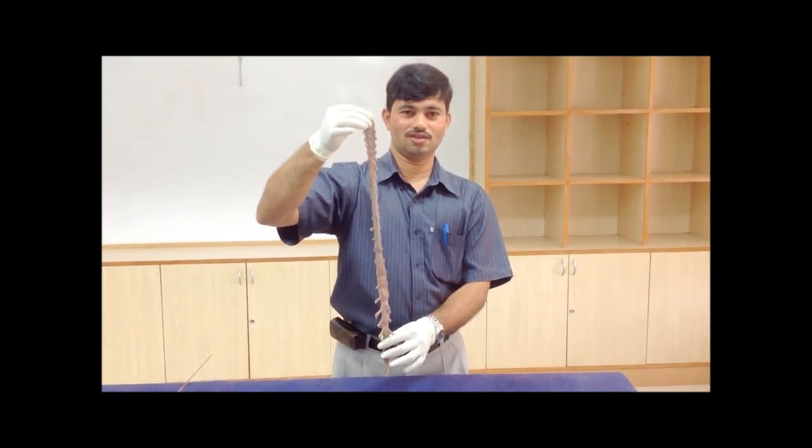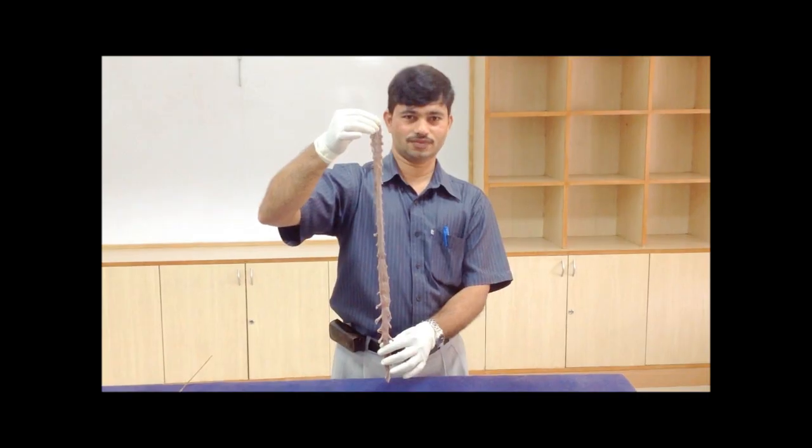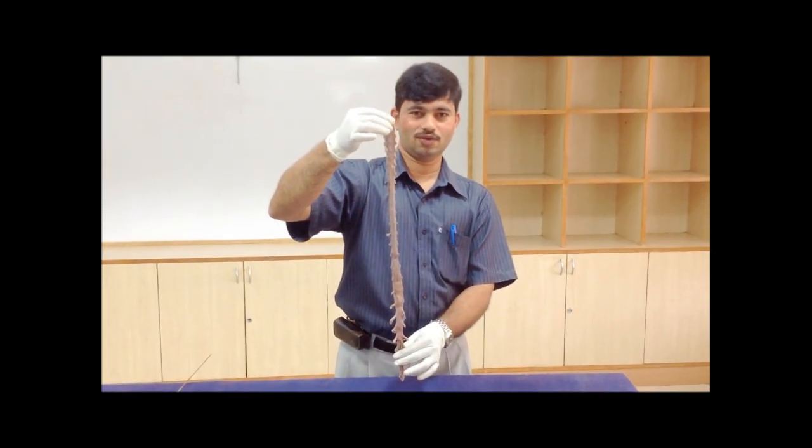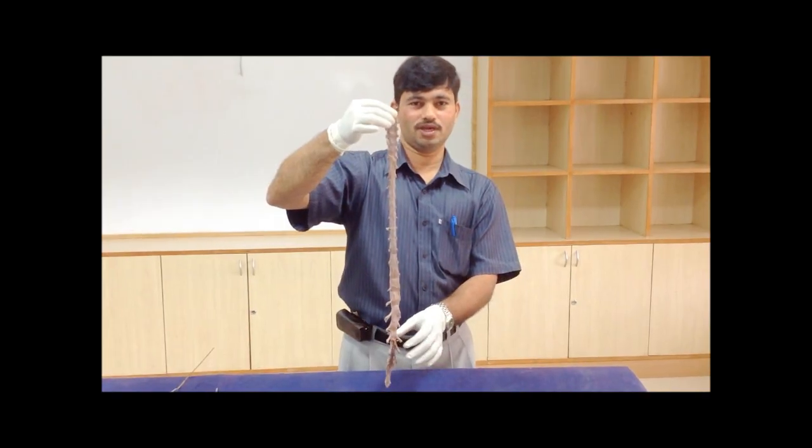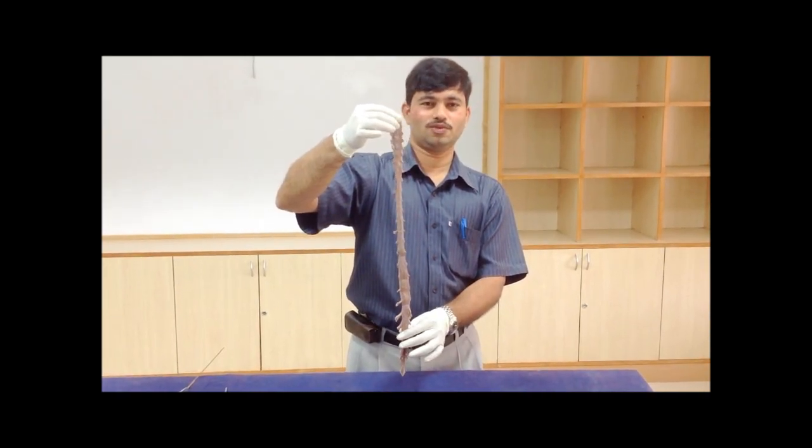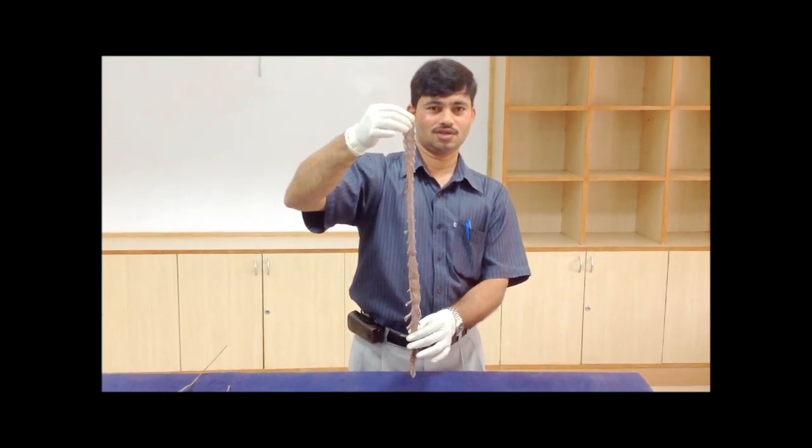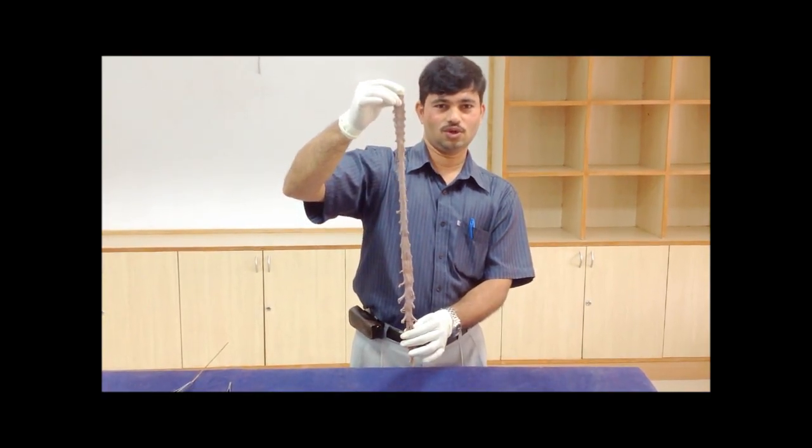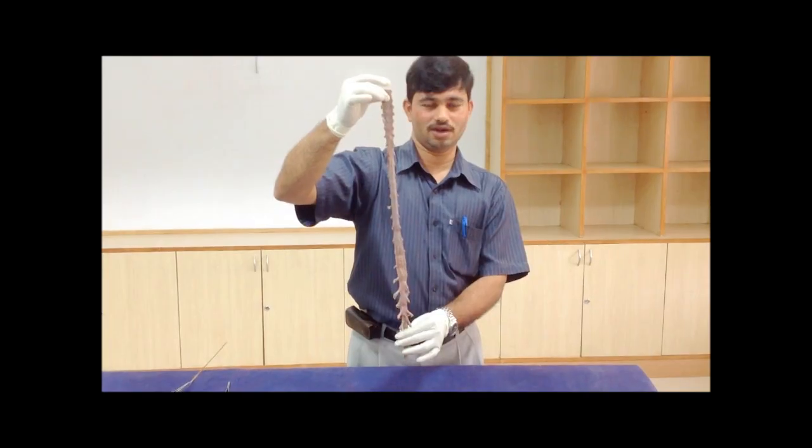Let us revise the spinal cord and the spinal meninges. The spinal cord is the lower part of the central nervous system and it occupies the upper two-thirds of the vertebral canal. It extends from the upper border of the atlas vertebra to the lower border of the first lumbar vertebra in adults.